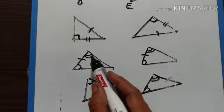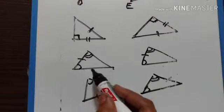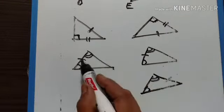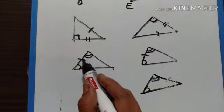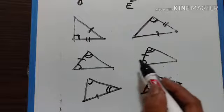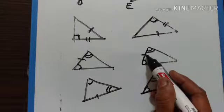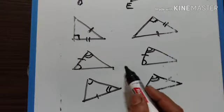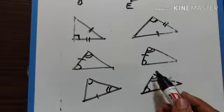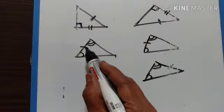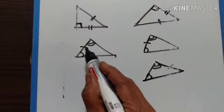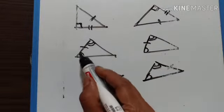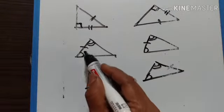If two angles of a triangle are equal to two angles of another triangle, and the included side of one triangle is equal to the included side of another triangle, then these two triangles are said to be congruent. The included side means the side which is between these two angles.